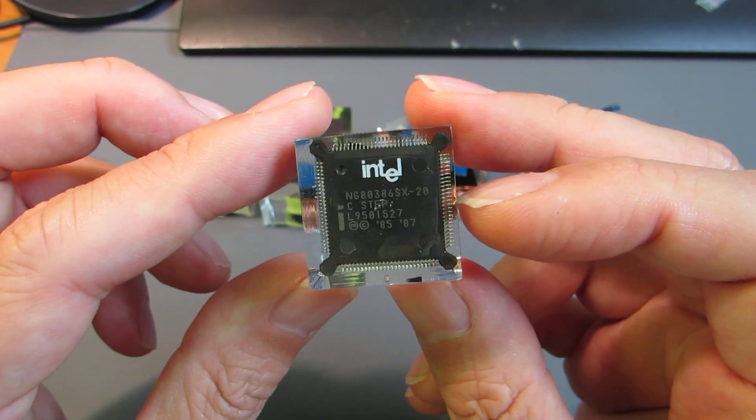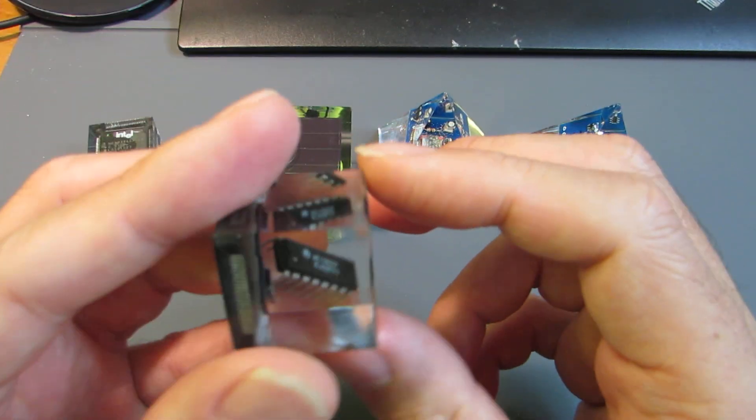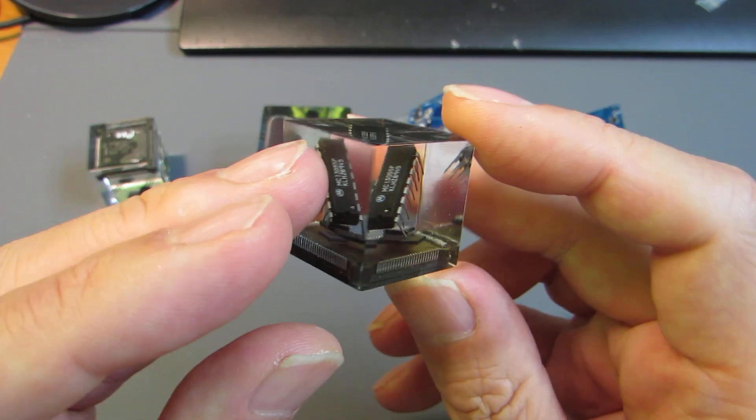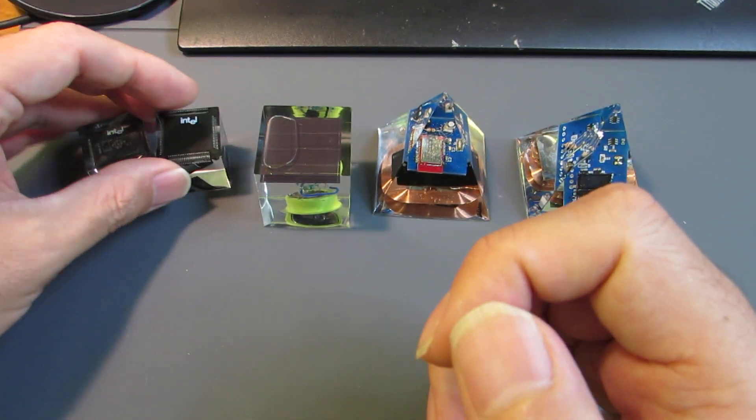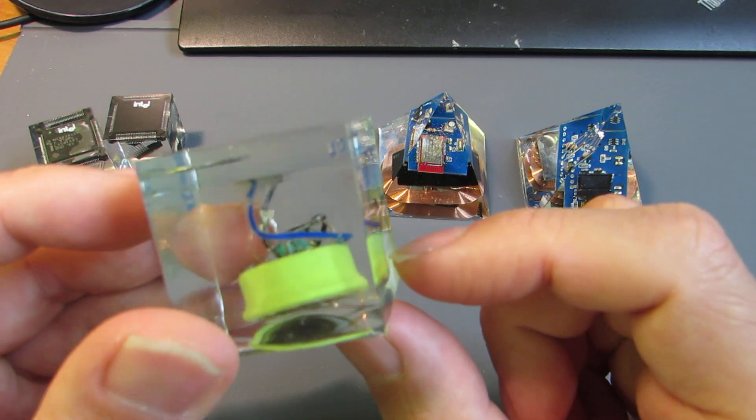This is an Intel AT386, and also here is some component inside the resin. It is very static. And the next one, I put the solar cell, solar cell with battery.